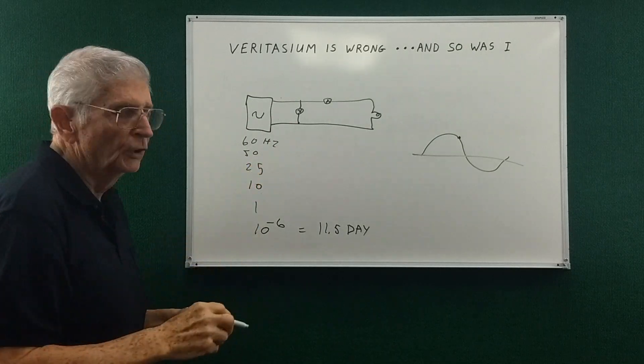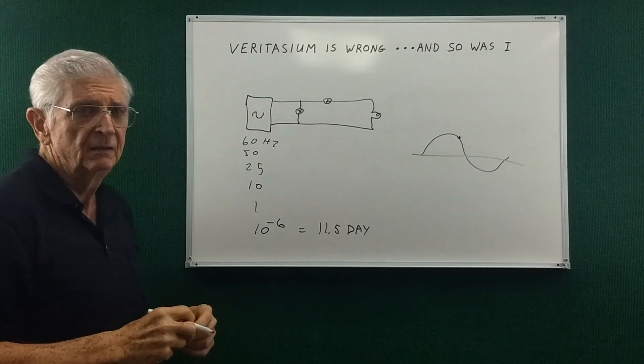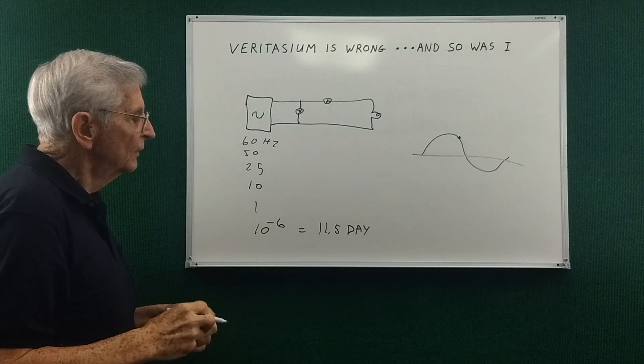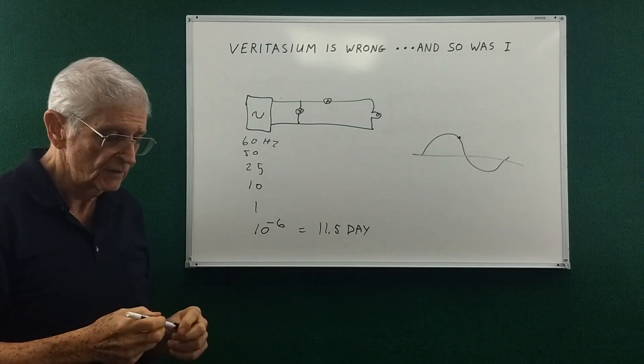I think we could look at the meters and say, well, it's DC because it isn't changing. So where's the transition point between AC and DC?